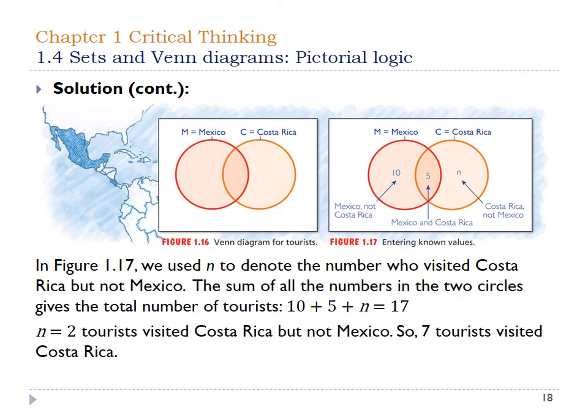Now that we have that number, we can also figure out how many total people went to Costa Rica. The 2 who went just to Costa Rica plus the 5 who went to both means 7 total people went to Costa Rica.